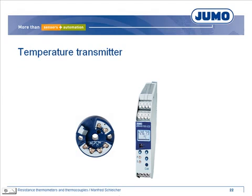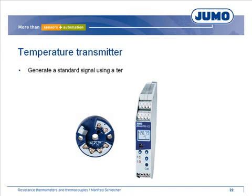Often it is reasonable to connect the thermocouple to a temperature transmitter on-site. The transmitter generates the temperature signal as a standard signal, for example 4 to 20 mA. The JUMO product range includes a number of transmitters for installation in terminal heads or transmitters for mounting on rail.